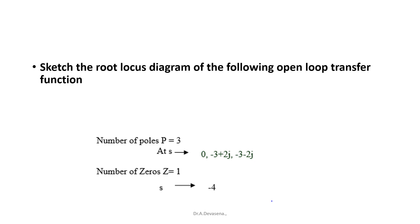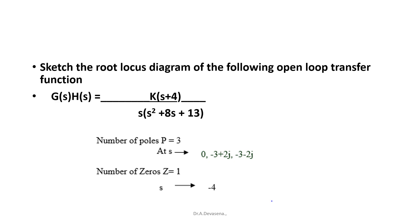Sketch the root locus diagram of the following open loop transfer function: G(s)H(s) is equal to k into (s + 4) divided by s into (s² + 8s + 13).